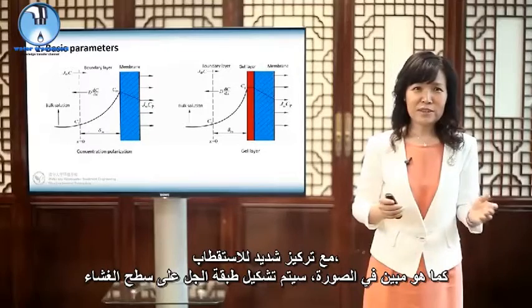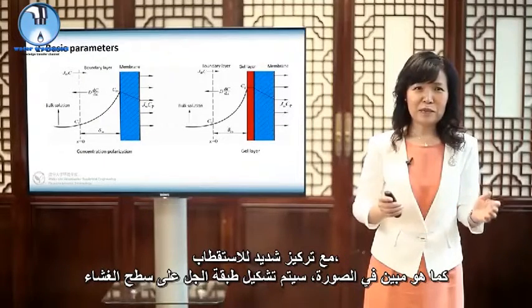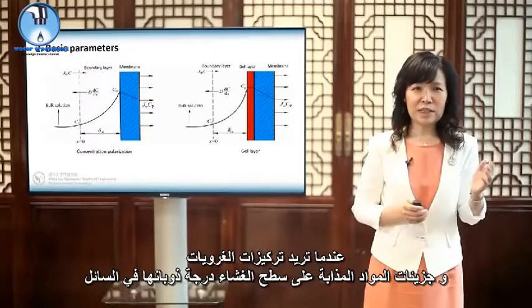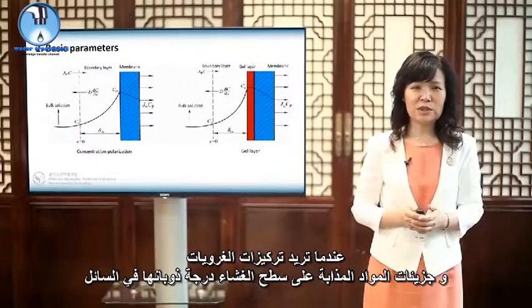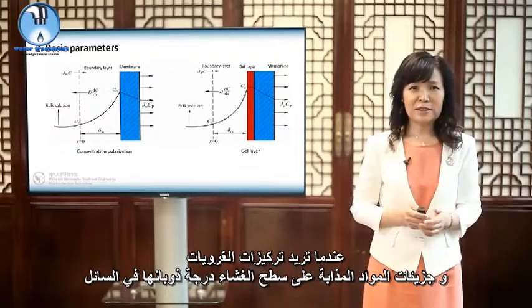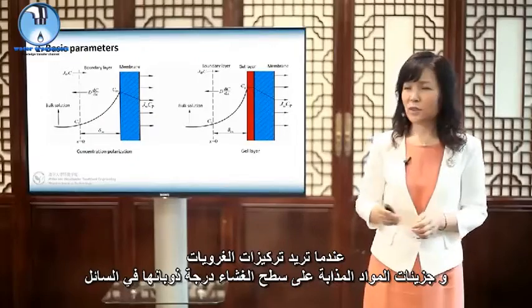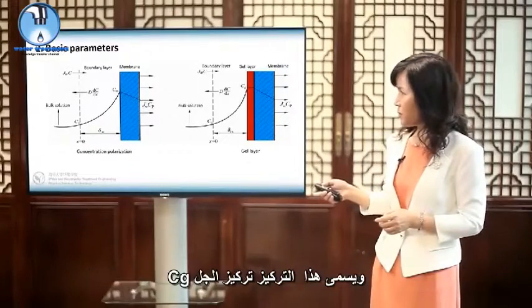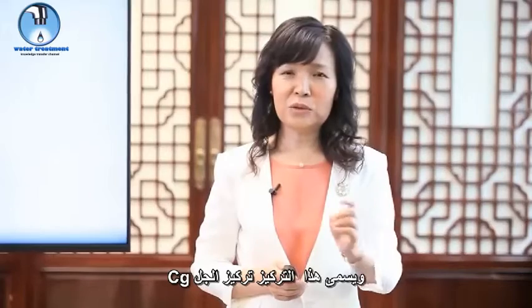With severe concentration polarization, as shown in the picture, a gel layer will be formed on the membrane surface when the concentrations of colloids and macromolecular solutes on the membrane surface exceeds their solubility in the solution. Such concentration is called the gel concentration.